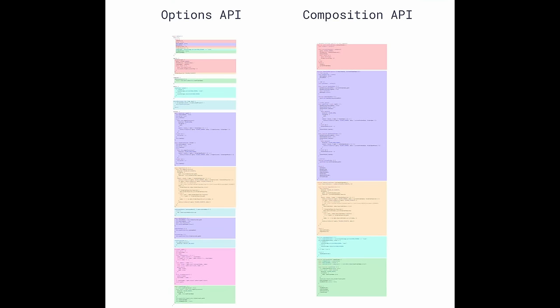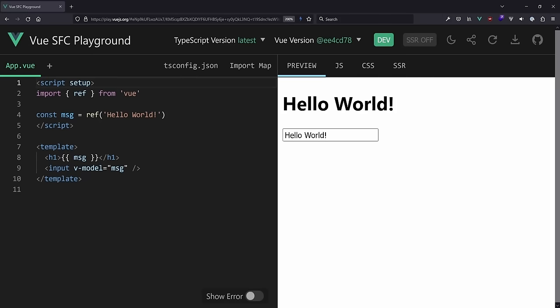This changed with the Composition API, but I think for the better. Most of you probably know that graphic already which clearly shows how, if you group and categorize everything by logic, the Options API and the Composition API look next to each other. With the Options API you group by option but don't have logical grouping, while with the Composition API you can do this very nicely.